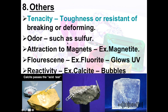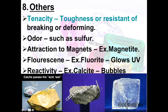Other properties include magnetism — for example, magnetite is attracted to metals. There is also fluorescence; fluorite glows under ultraviolet light.